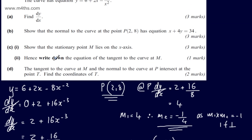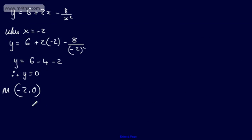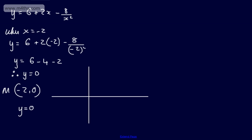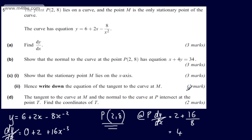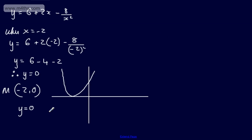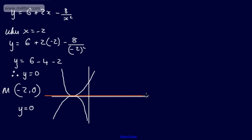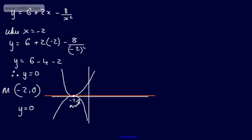The next part — part C(ii) for one mark — asks us to write down the equation of the tangent to the curve at M. We can simply state that this is y = 0. If we think about what the curve looks like, at a minimum or maximum point the gradient of the tangent is 0. Since M is at (−2, 0) on the x-axis, the tangent is the horizontal line y = 0.